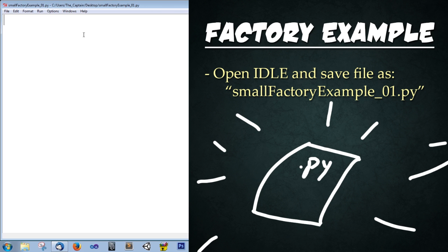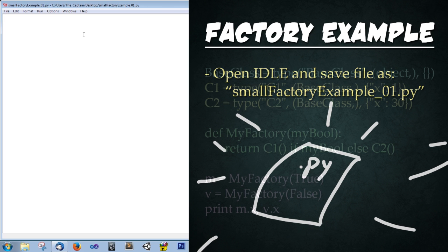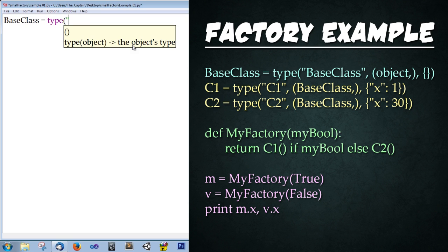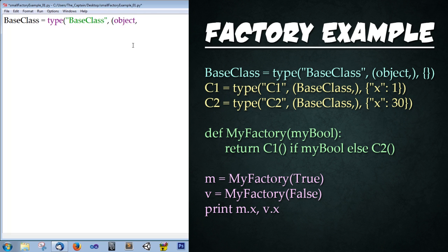First thing we're going to do is create a couple of classes — first a base class, then a couple of subclasses. We're going to do this using the type creation method, which we discussed in the last lesson. So type: BaseClass = type('BaseClass', (object,), {}) and press enter.